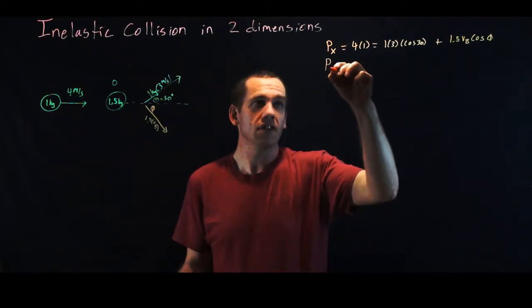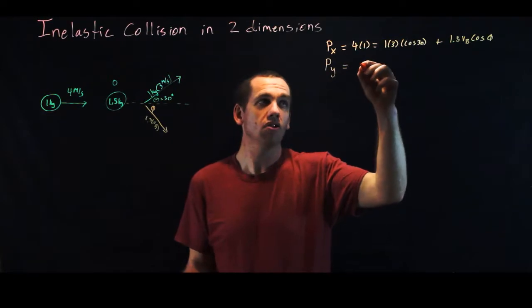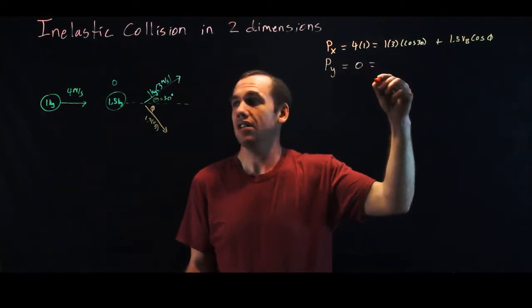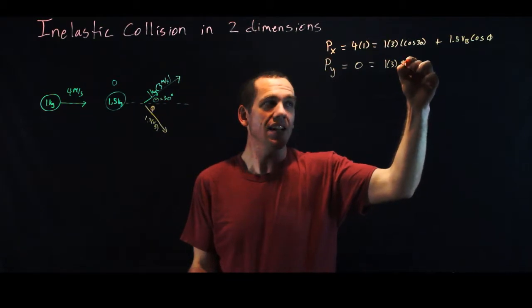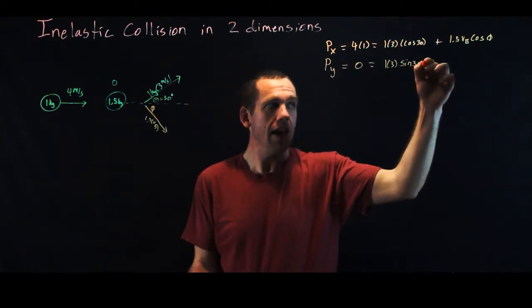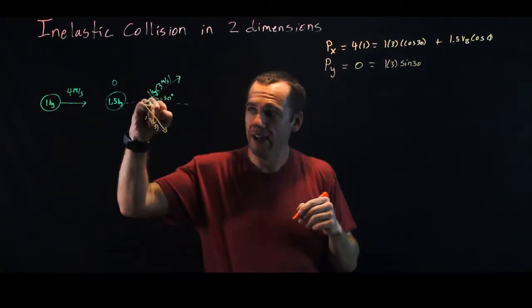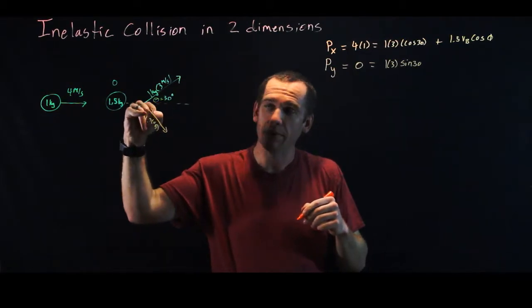The momentum in y looks similar except it will be in y. So initially we had zero and we have zero equals 1 times 3 times the sine of 30. And now I either have to deal with the fact that this angle is negative or I'm going to subtract this.